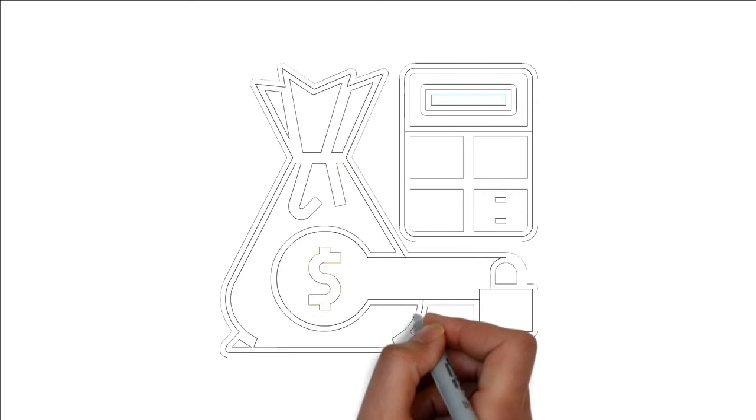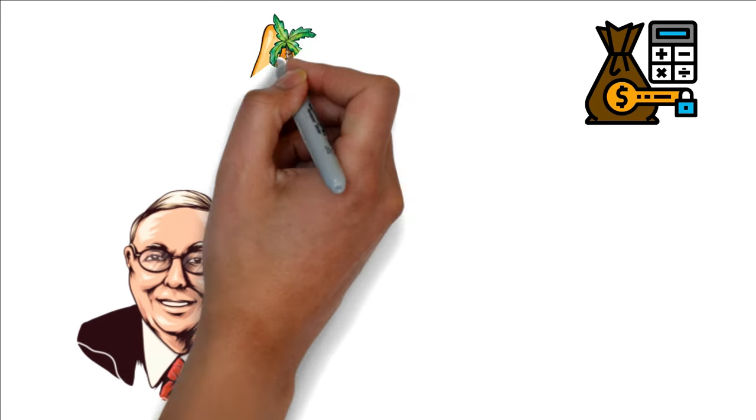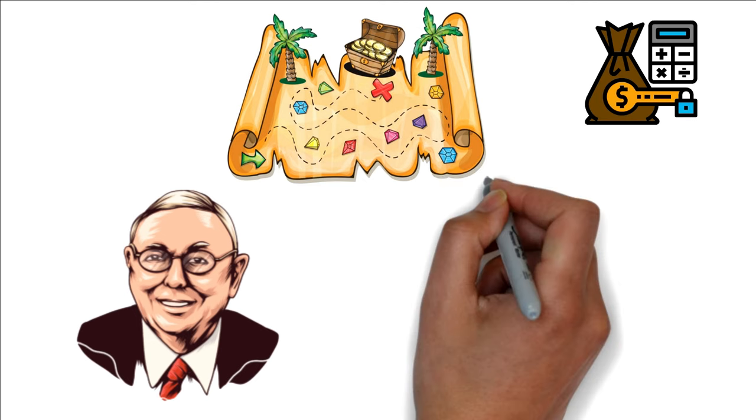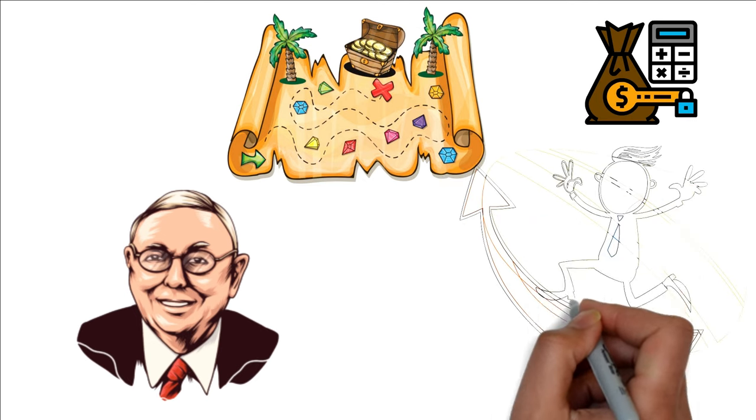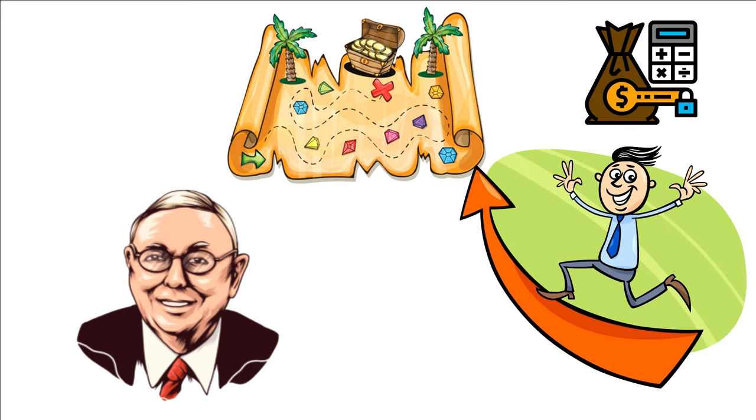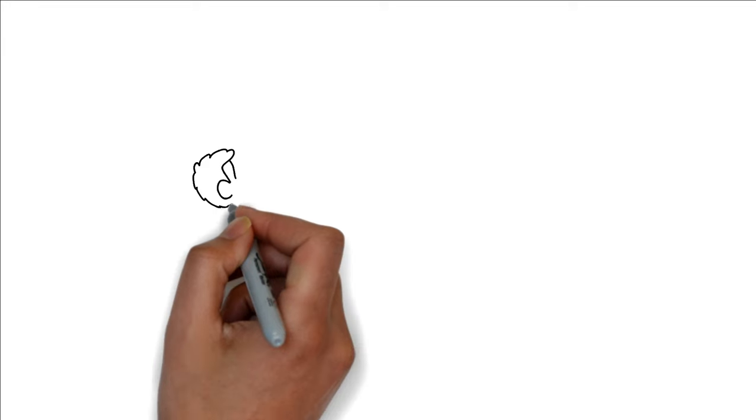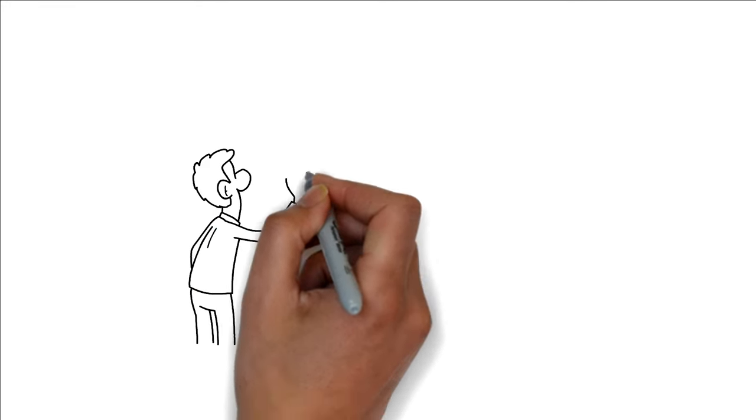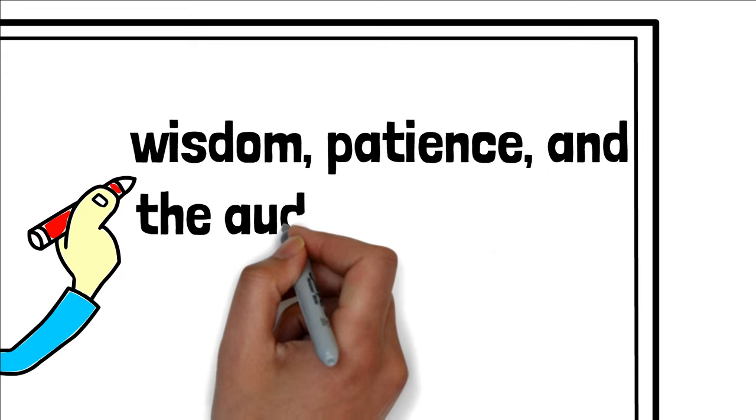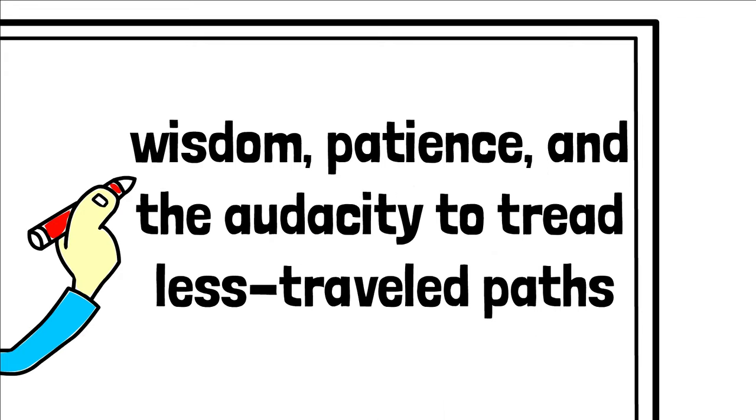Unlocking the secrets of investing, especially from minds as illustrious as Charlie Munger's, is akin to finding a map to hidden treasures. Munger's perspective on investments challenges the oft-touted paths and prompts us to reevaluate and refine our strategies. It's a stark reminder that immense wealth doesn't always stem from massive capital, but often from wisdom, patience, and the audacity to tread less traveled paths.